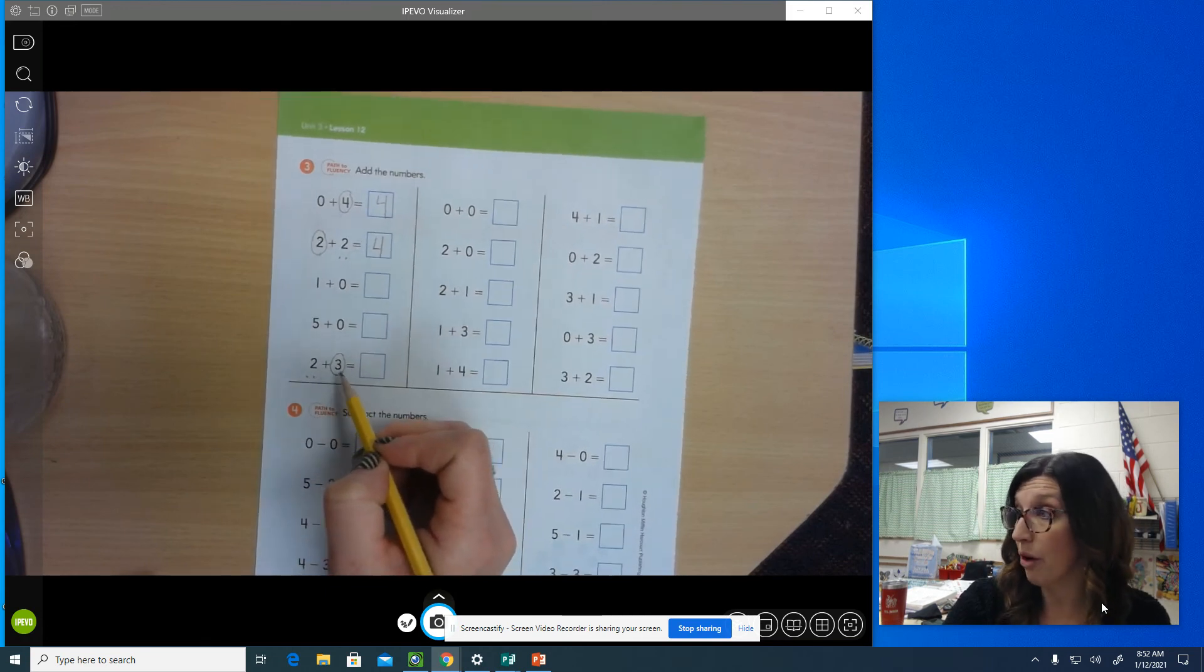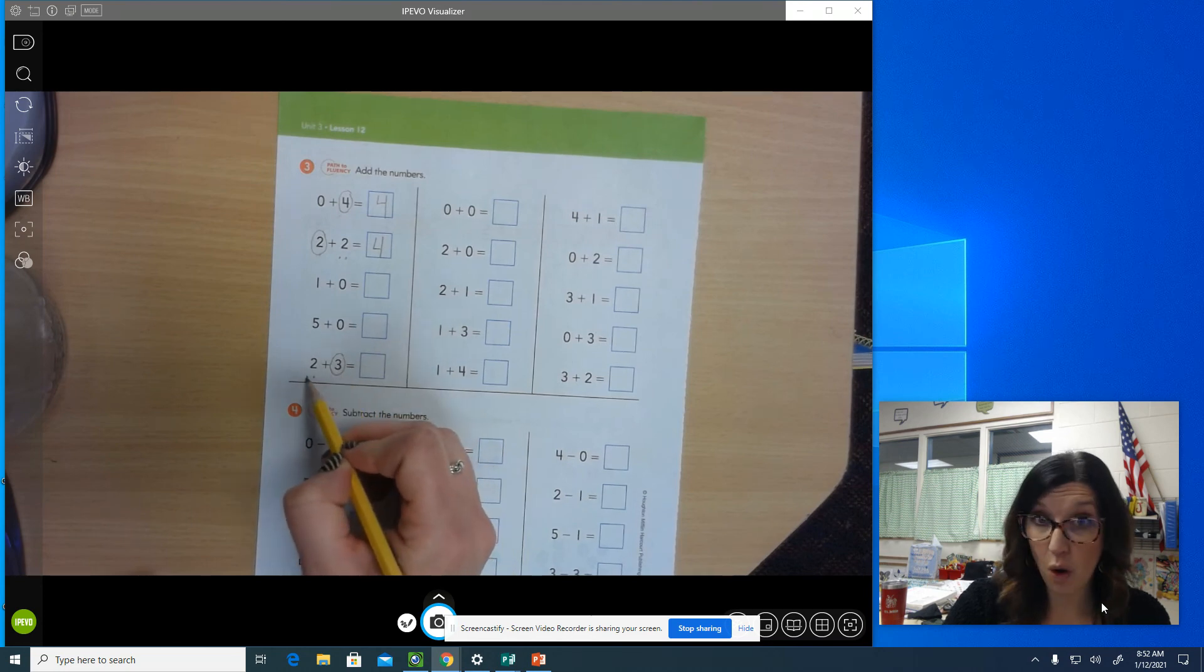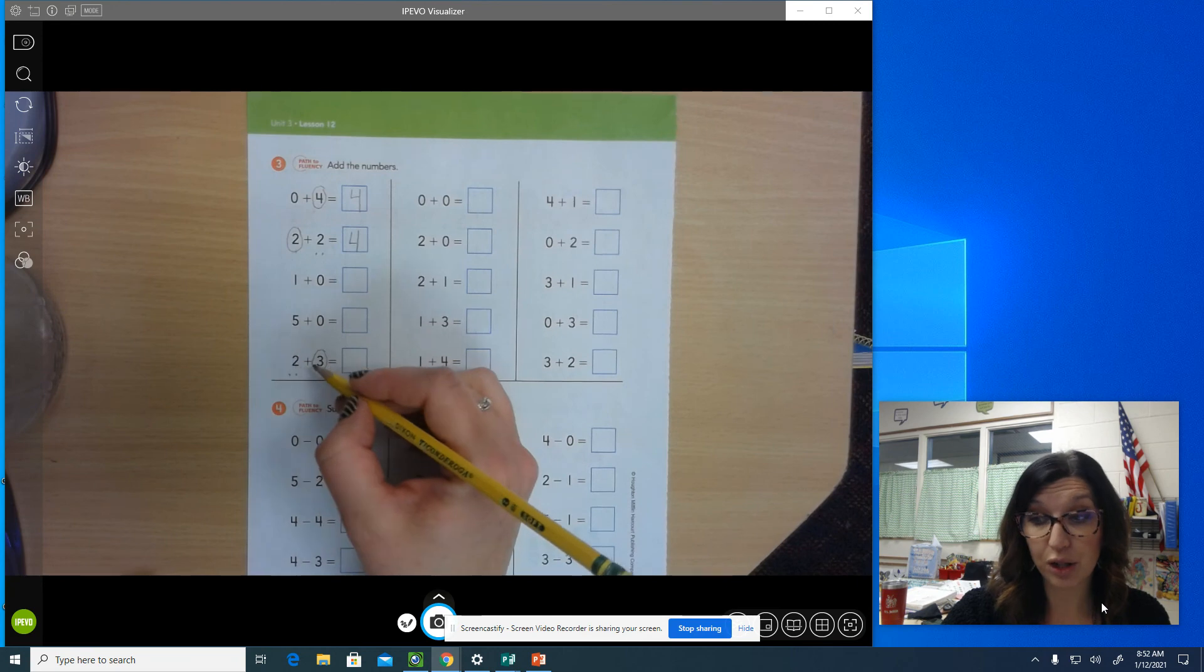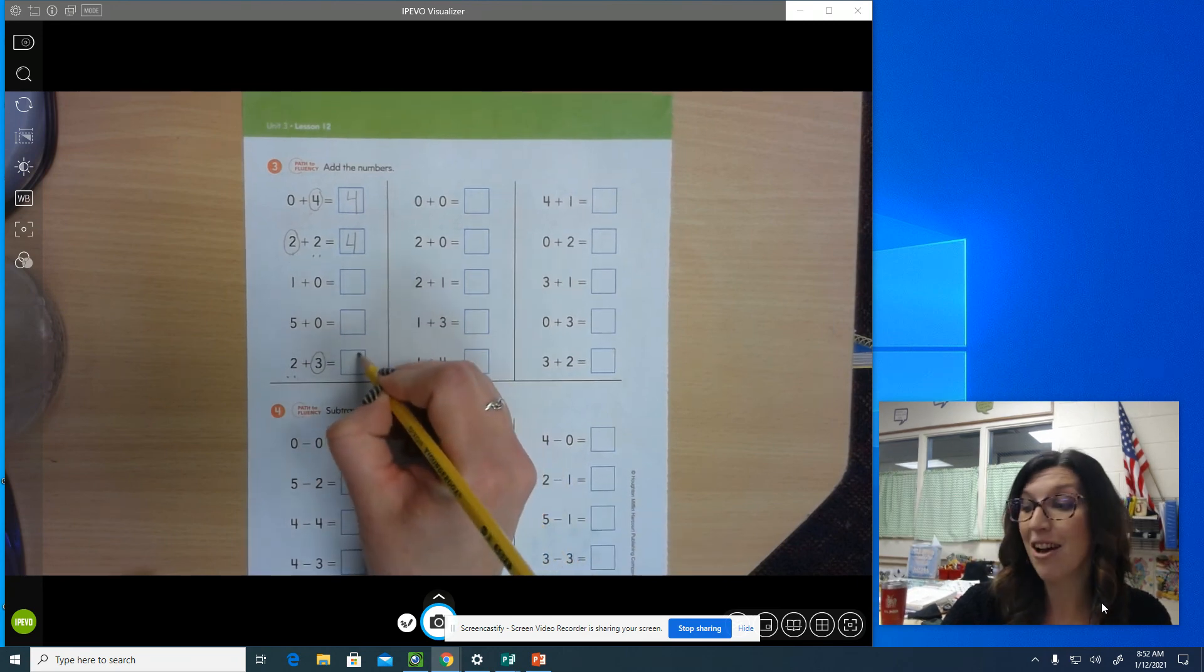So count on with me. Here we go. Three, four, five. Three plus two or two plus three equals five.